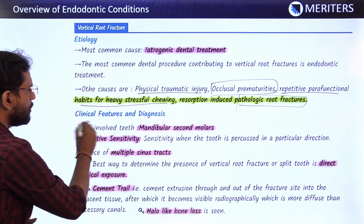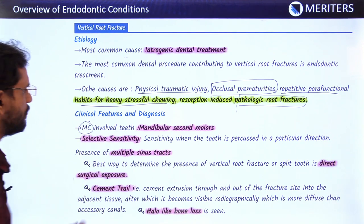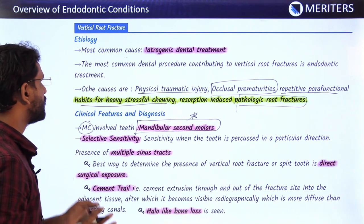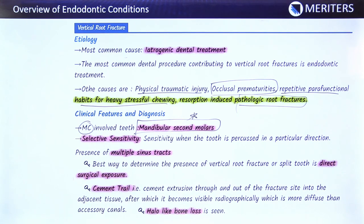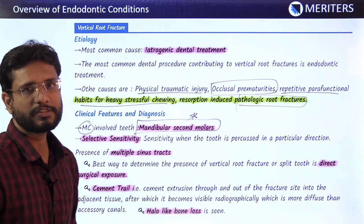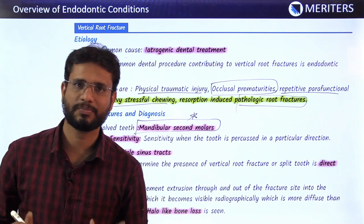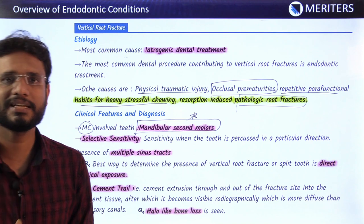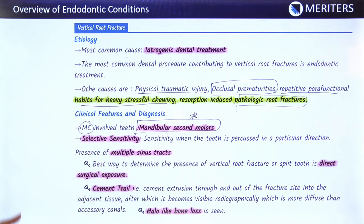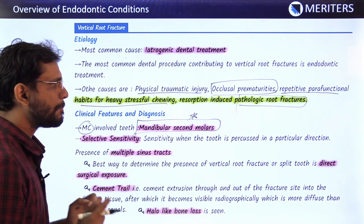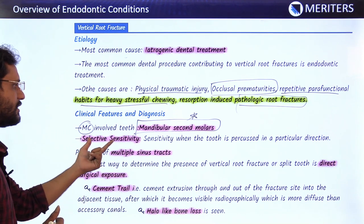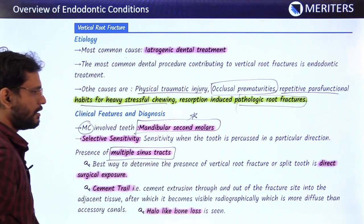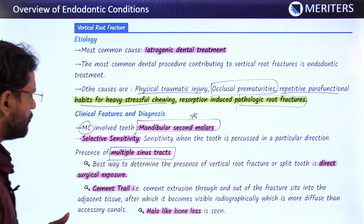The most commonly involved tooth in vertical root fractures is the mandibular second molar — very important for the exam. There is selective sensitivity: when percussing the tooth in a particular direction only, it shows pain; in other directions it does not. This selective sensitivity on percussion in a particular direction is a characteristic of vertical root fractures. Multiple sinus tracts may also be present in relation to the tooth with a vertical root fracture.